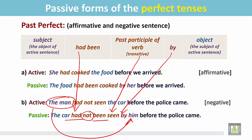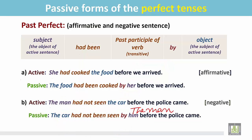You can also write 'the man' instead of 'him.' So the passive form is: 'The car had not been seen by the man' or 'by him before the police came.' We do not change the final clause because there is no object for that verb.